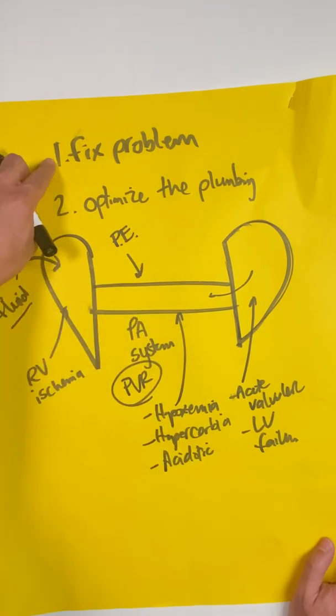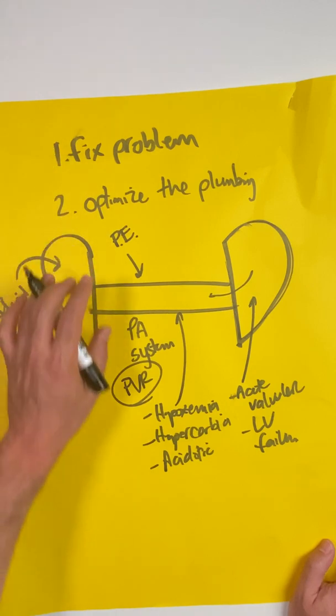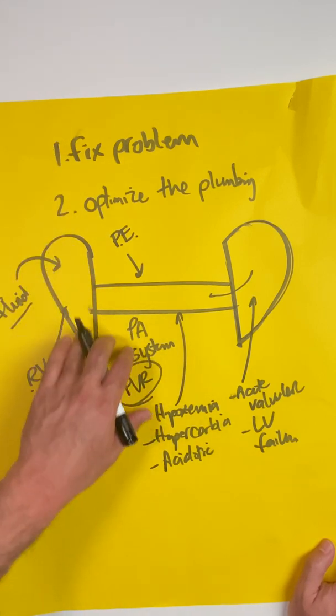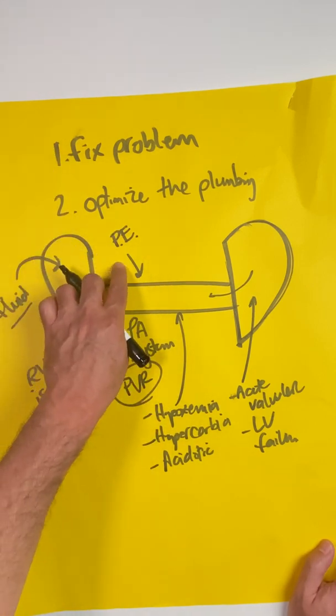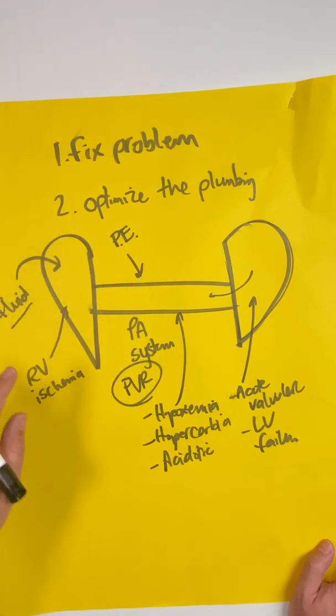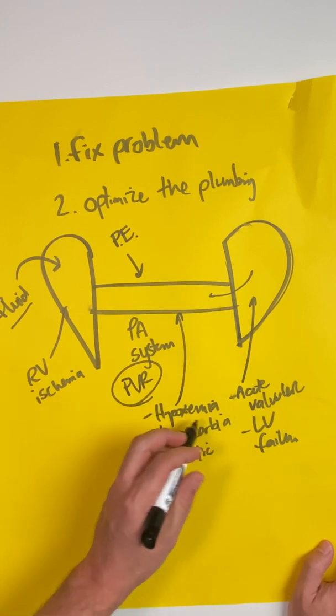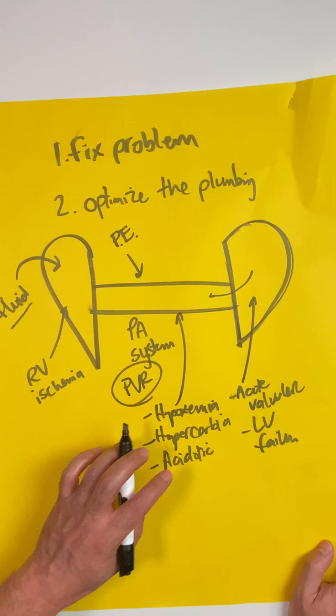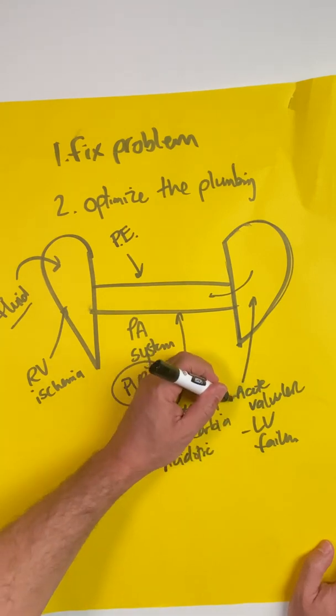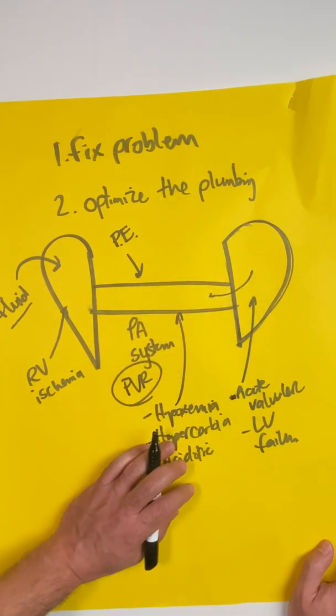So that takes us to step number one: you got to fix the problem. You have to try and identify what's wrong with the person. If the person has a massive PE, then you need to lyse the person. If the person's having RV ischemia, they need to go to the cath lab and get that coronary reperfused. If they have hypoxemia, fix the hypoxemia. If they're acidotic, fix the acidosis. If there's an acute left-sided problem, fix that left-sided problem.